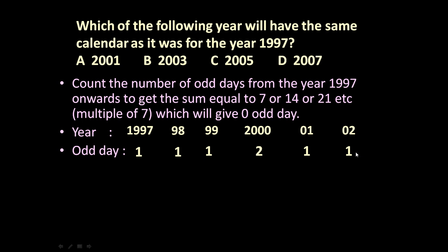Let us count the odd days: 1, 2, 3, 4, 5, 6, and 7. So up to 2002, there are seven odd days. The sum of odd days up to 2002 equals seven odd days. Seven odd days means one week, which means zero odd days - one week plus zero extra days equals zero odd days.